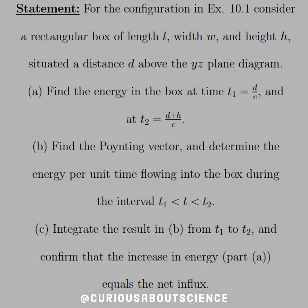So the statement is, for the configuration in example 10.1, consider a rectangular box of length L, width W, and height H, situated a distance D above the YZ plane in the diagram. Part A: find the average energy in the box at time T1 equals D over C, so we have distance over speed, meters canceling with meters per second leaves us seconds. And T2 equals D plus H over C.